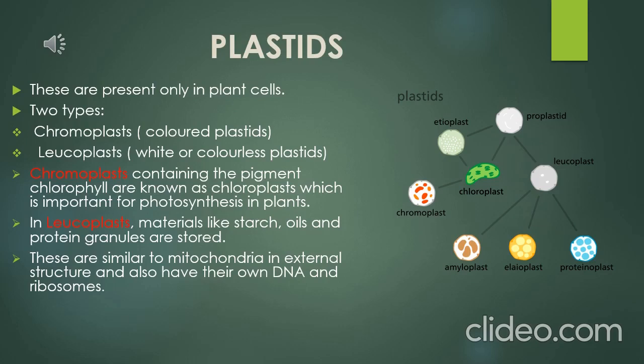Chromoplasts containing the pigment chlorophyll are known as chloroplasts, which are important for photosynthesis in plants. Plants have chlorophyll, which gives them their green color. In leucoplasts, materials like starch, oils, and protein granules are stored — these are the colorless plastids.